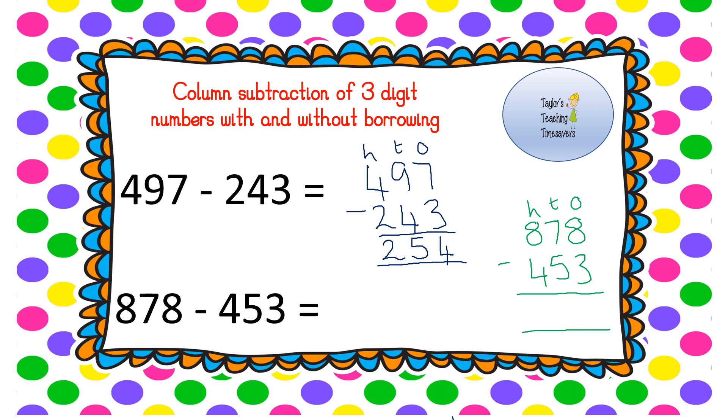So once again, 8 take away 3 is 5. 70 take away 50, or if you want to be able to use your fingers you can do 7 take away 5 is 2, or 20 since we're in the tens column. And 800 take away 400 is 400.